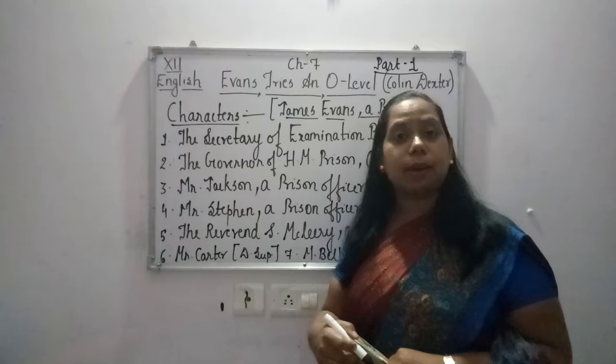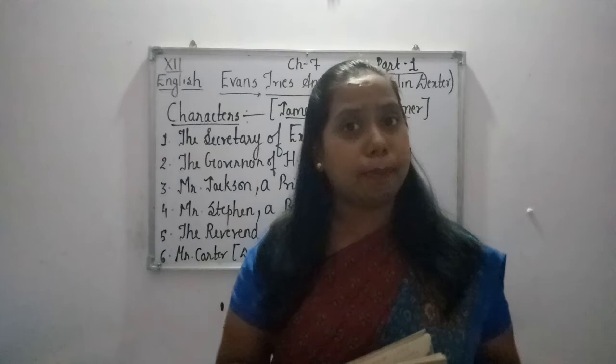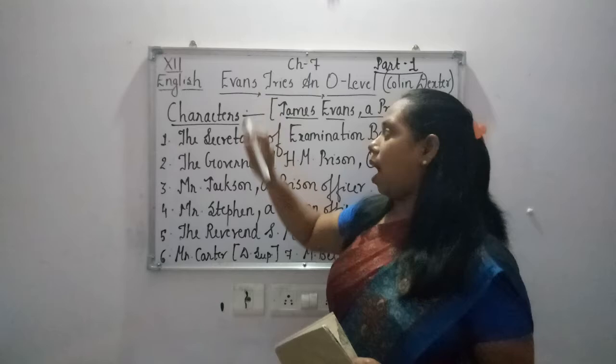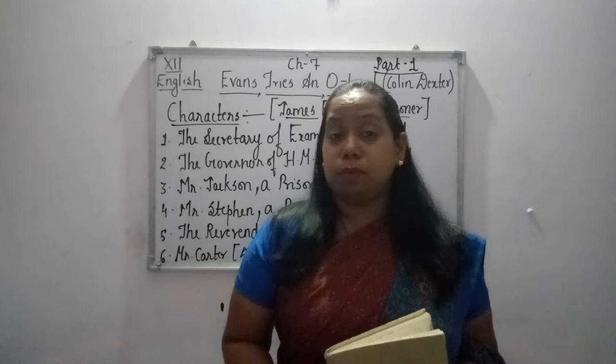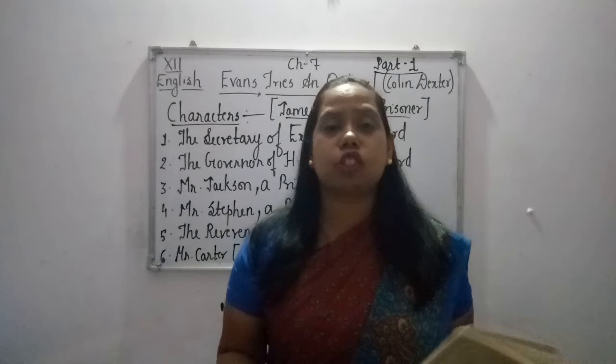This particular chapter is all about a person who is a prisoner called Evans. The theme of the chapter is all about the cleverness this prisoner Evans has in himself. He is rather a kleptomaniac — he has a strong urge to steal.